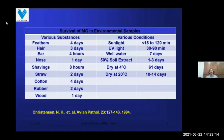Mycoplasma survives in feeders for 4 days, hair for 3 days, on feathers 4 hours, nose 1 day, shavings 8 hours, straw 2 days, cotton 4 days, rubber 2 days, and wood 1 day. In sunlight it survives less than 15 to 120 minutes; in UV light 30 to 90 minutes; in well water 7 days; in 50% soil extract 1 to 3 days; at 4°C in dry weather for 61 days; and at 20°C for 10 to 14 days. Based on these survival times, we can design biosecurity measures accordingly.